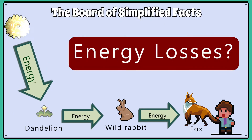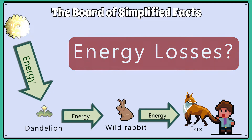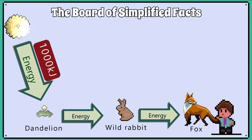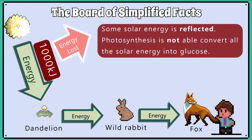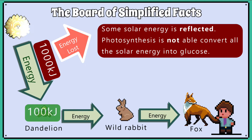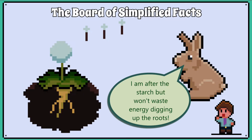To help us understand how energy is lost as we move up the food chain, we'll use some oversimplified numbers and some made-up energy values. Let's imagine that the dandelion plant has 1,000 kilojoules of solar energy reaching it in spring and summer, but it will only be able to convert a small percentage of that solar energy into glucose production via photosynthesis.